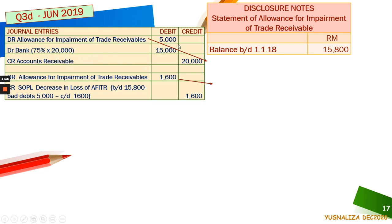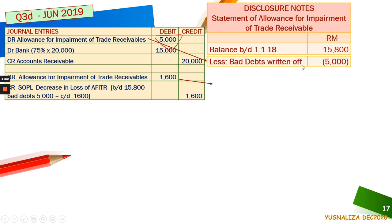So you have that 5,000. That 5,000 affects your allowance for impairment balance. When it affects your allowance balance for impairment, this 5,000 will have to be reflected here. First, you put the balance, then you put your bad debts written off here. If you have any bad debts recovered or recovery of bad debts, that will be added here.